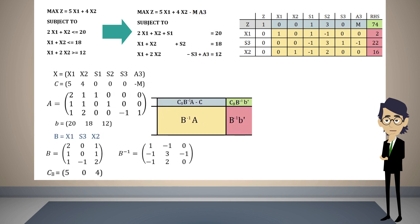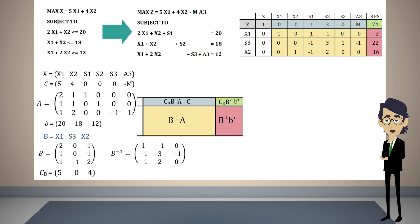Let us start analyzing the range in which the right-hand side values of the constraints can vary. For instance, let us analyze the range in which the first resource can vary. Currently the value of that resource is 20, but let us find out how much this value can change without affecting the solution — that is, in which range of values the basic variables in the solution will remain basic.